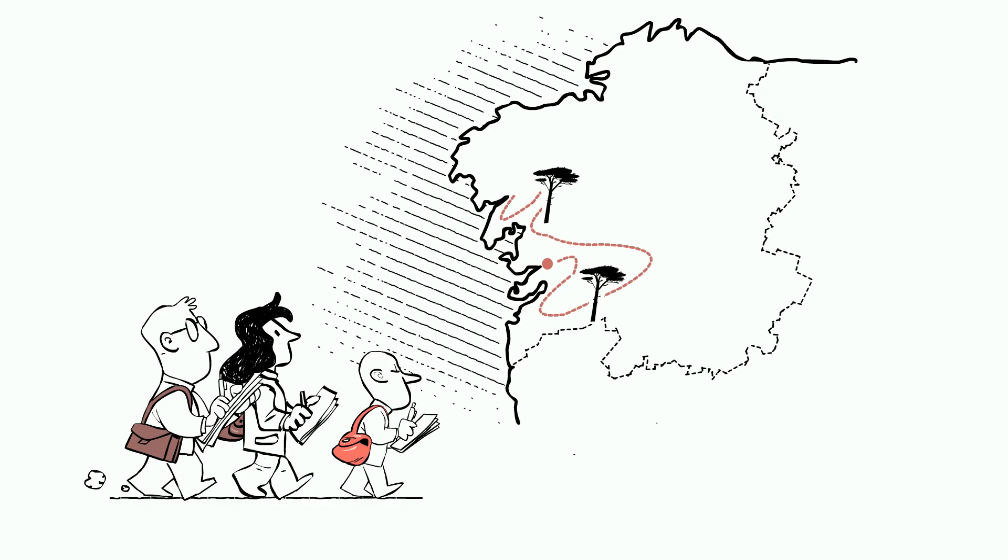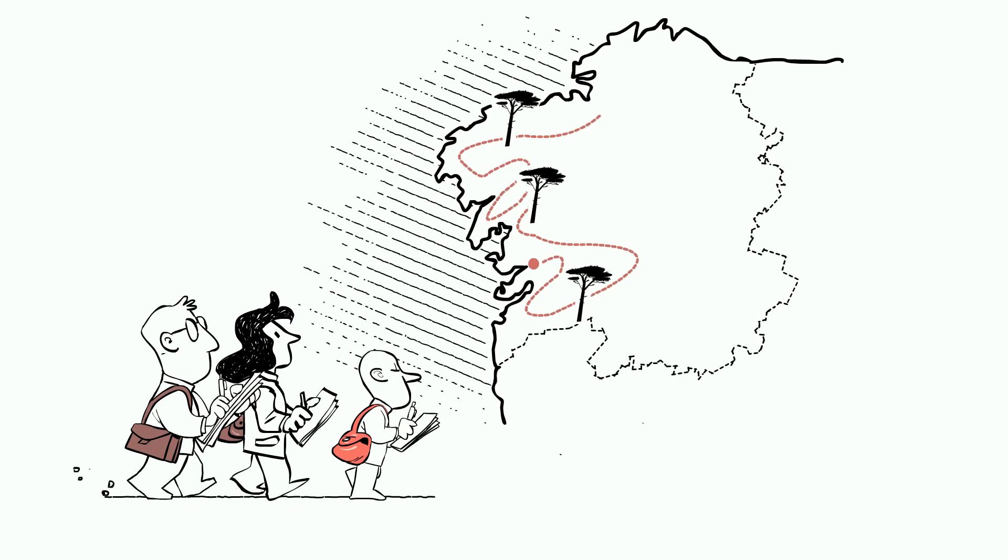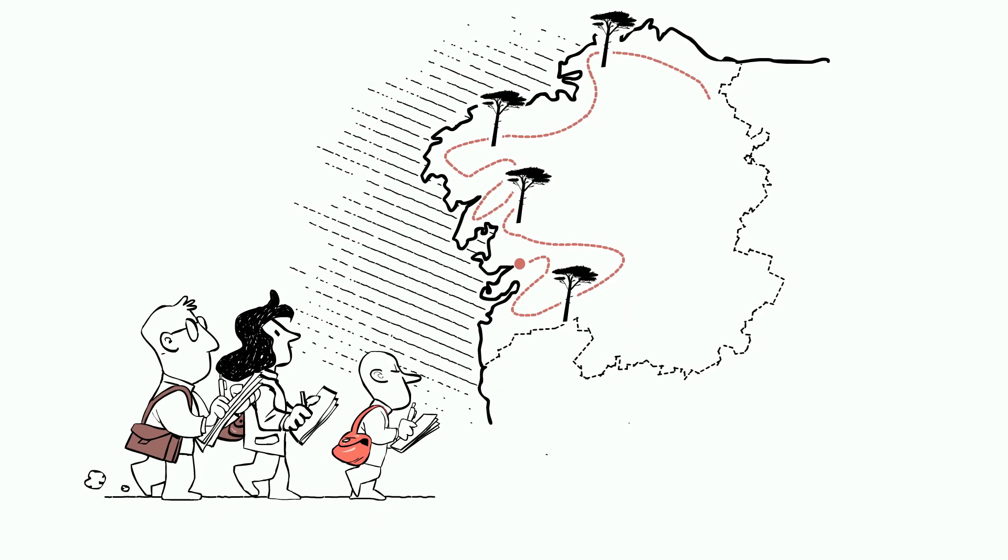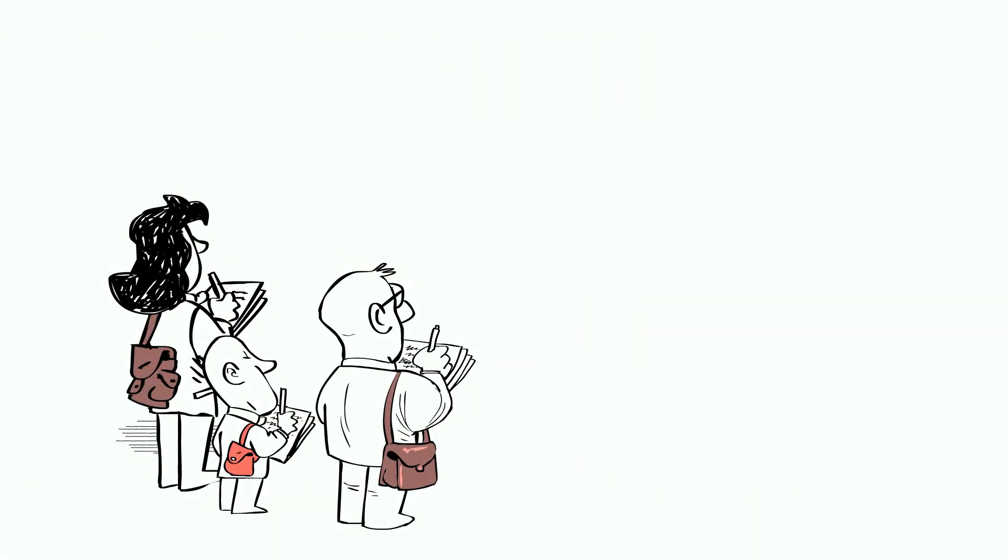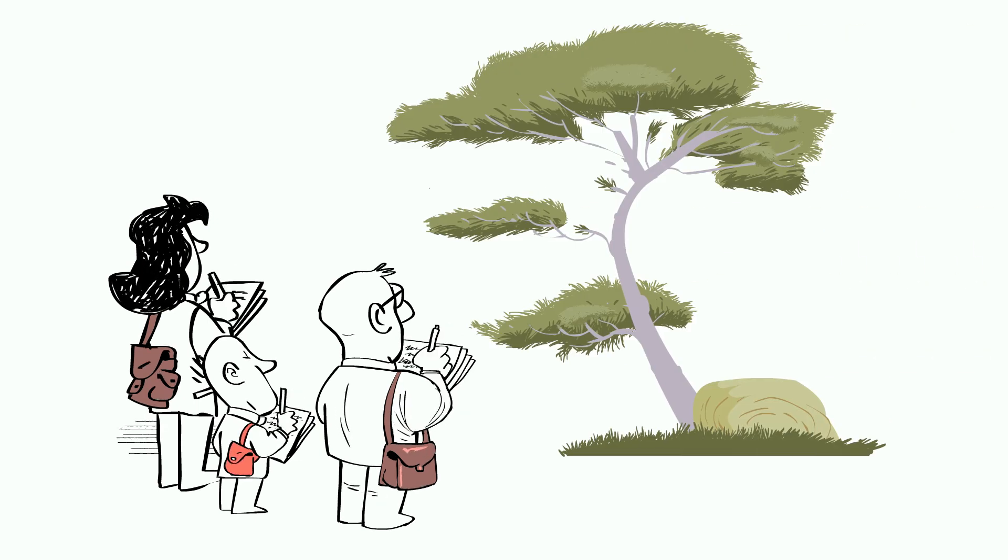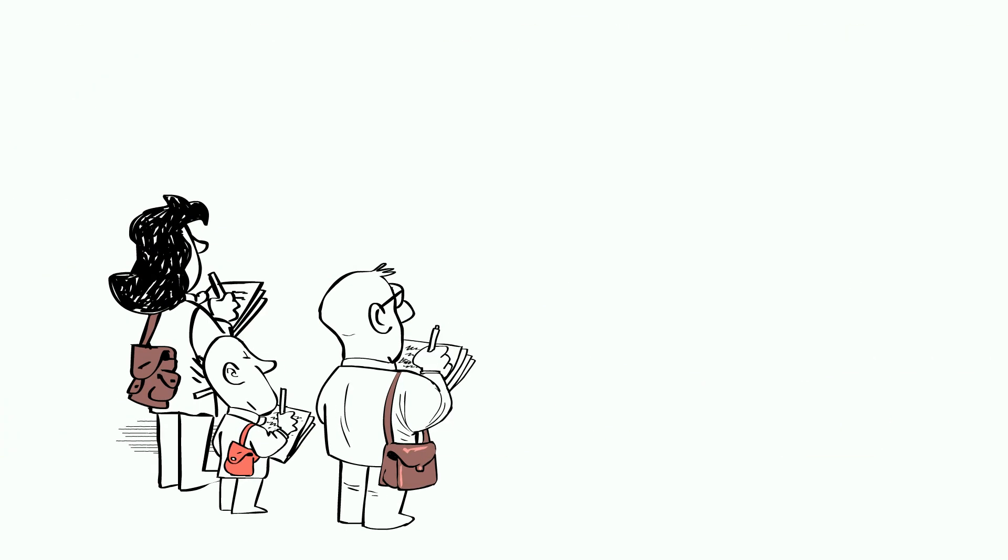The first step was to select superior pine trees from Galician coastal areas, which provided the best guarantee that the trees were native to Galicia. These superior pines had higher growth, straighter stems, and thinner bark.